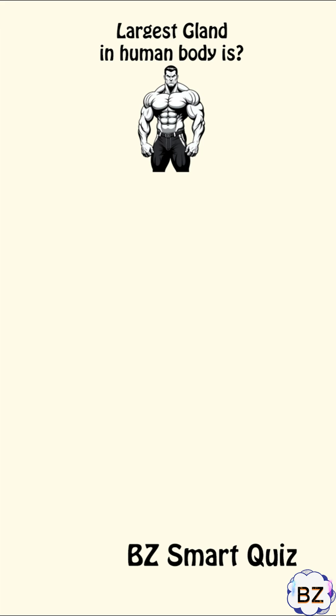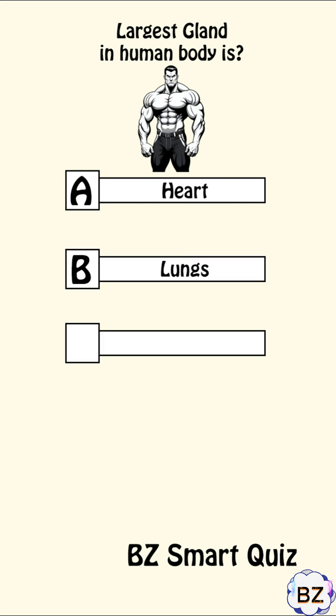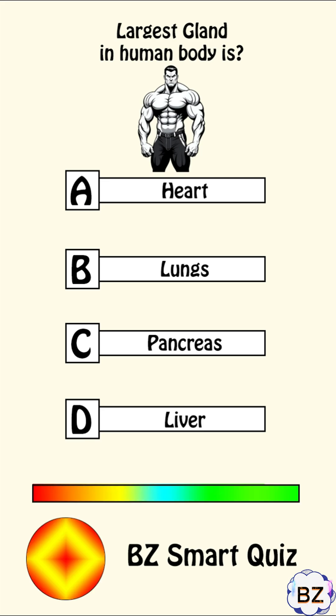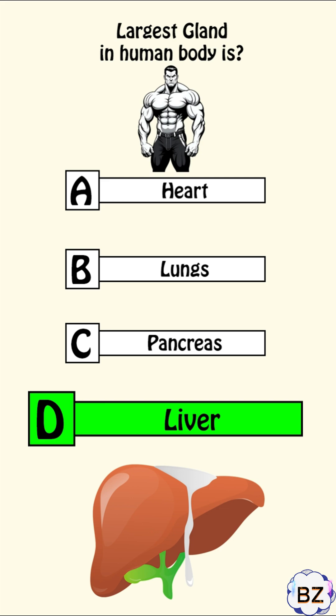Largest gland in human body is? A. Heart, B. Lungs, C. Pancreas, D. Liver. Correct answer: D. Liver.